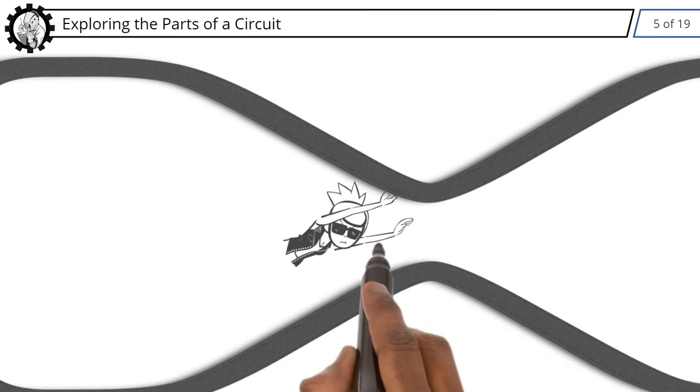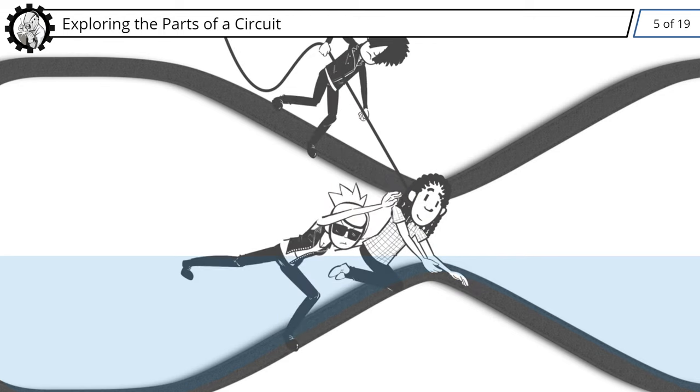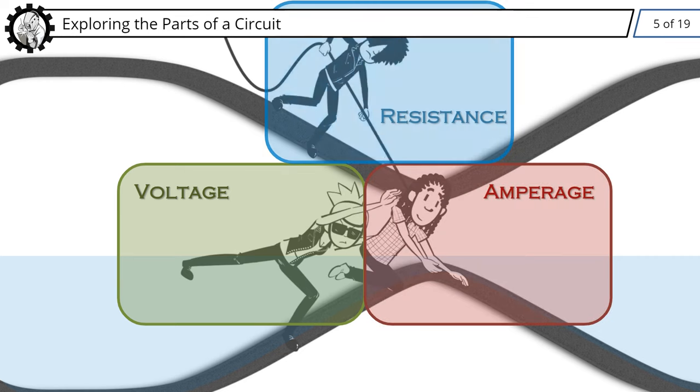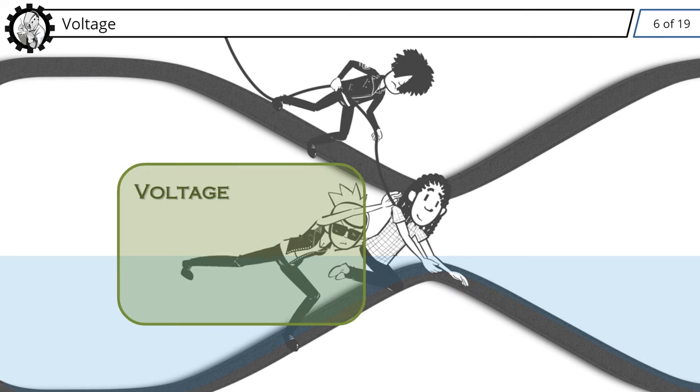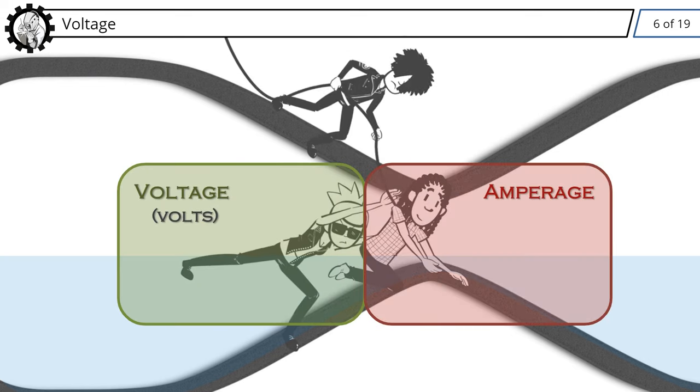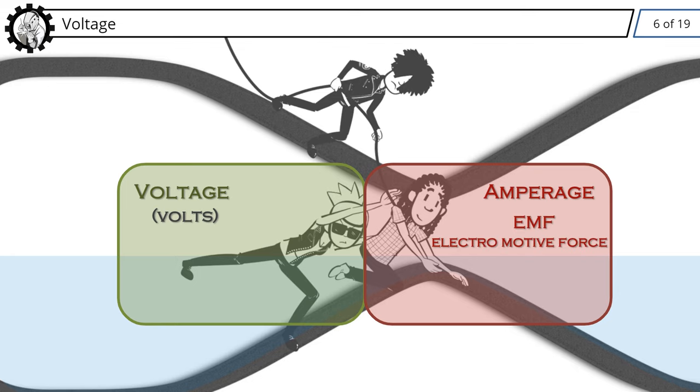With an understanding of what electricity is, let's move on to exploring the parts of a circuit. Voltage. Electrons flow as a result of pressure, called voltage. It's measured in volts. It is the force that causes amperage to flow, sometimes also called EMF or electromotive force.